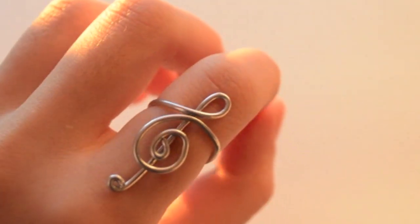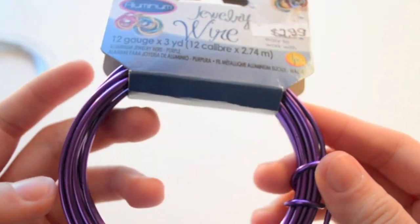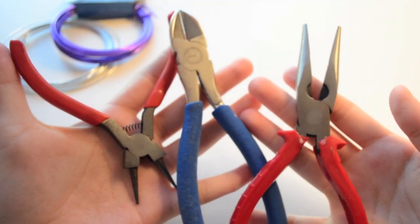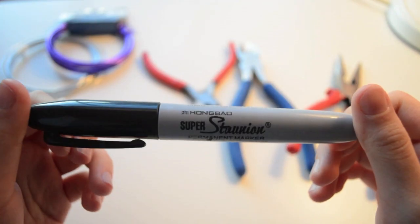You will need jewelry wire in any color you would like. I'll be using a silver 12 gauge by 3 yard wire. Round nose pliers, cutting pliers, and the flat nose pliers are optional. And a really thick marker.